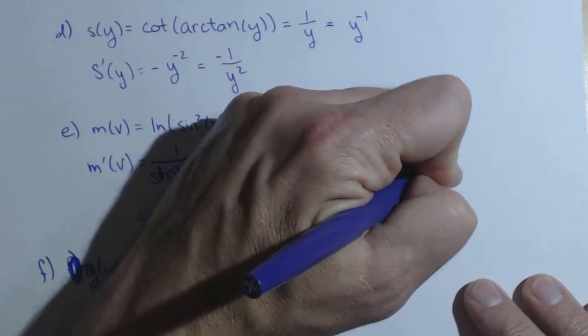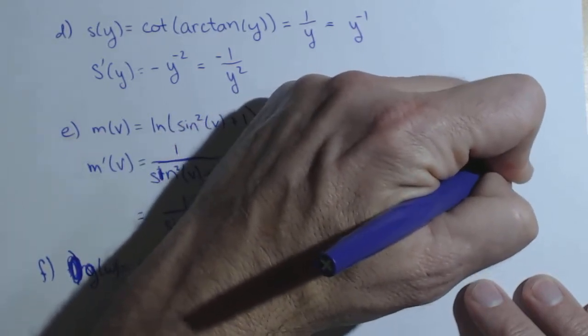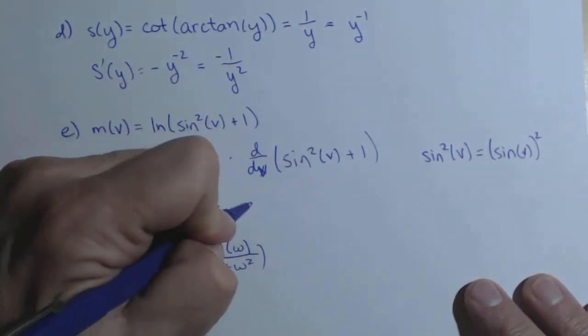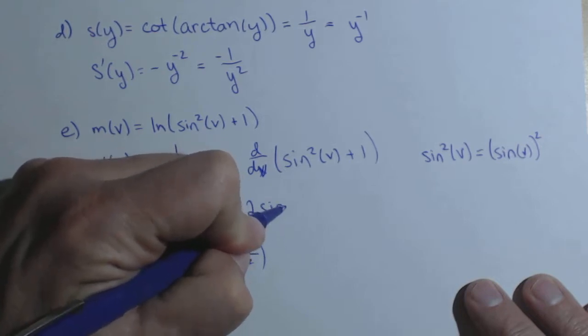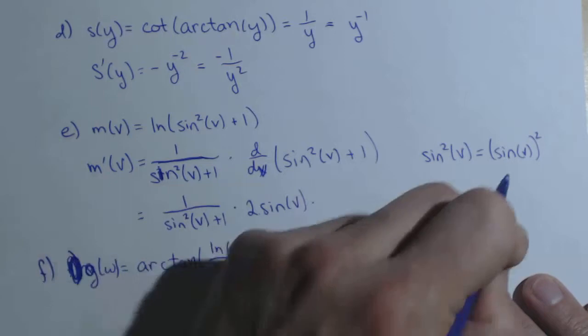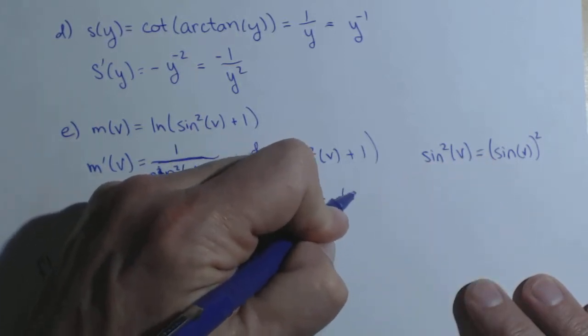Remember, sine squared of v is the same thing as sine of v, the quantity squared. This is a chain rule. So that two comes out front, so we have two sine of v, and the part people usually forget is times the derivative of the inside function, which is sine of v. So times a cosine of v.